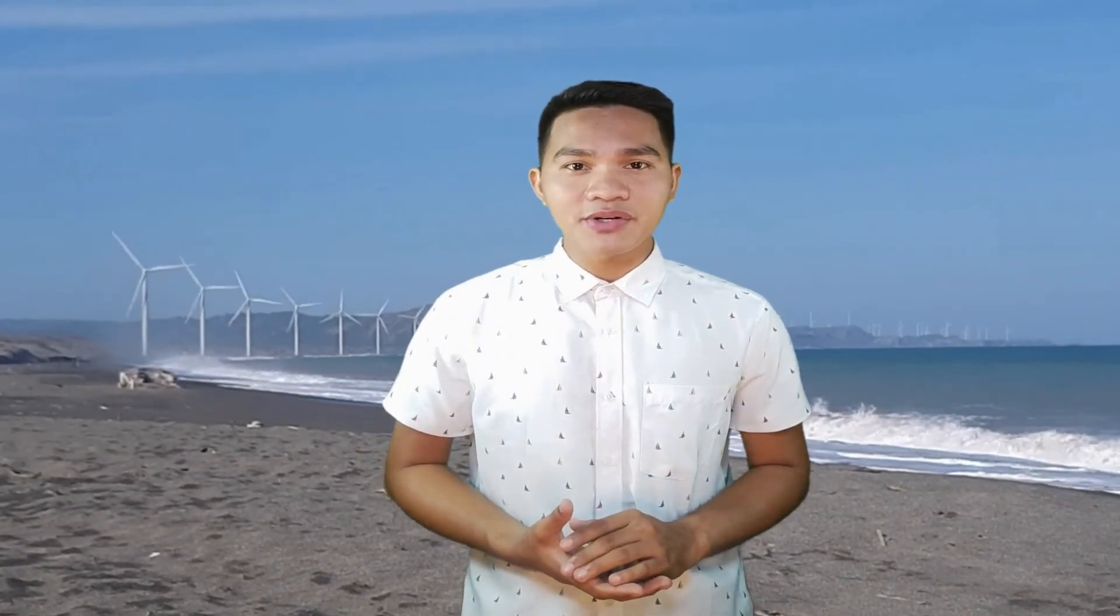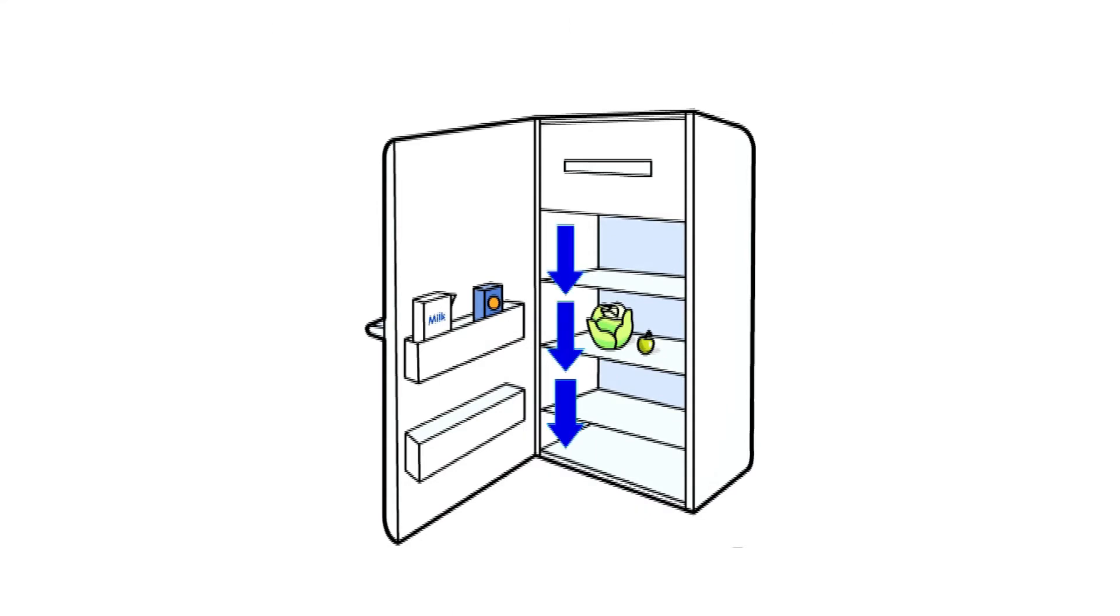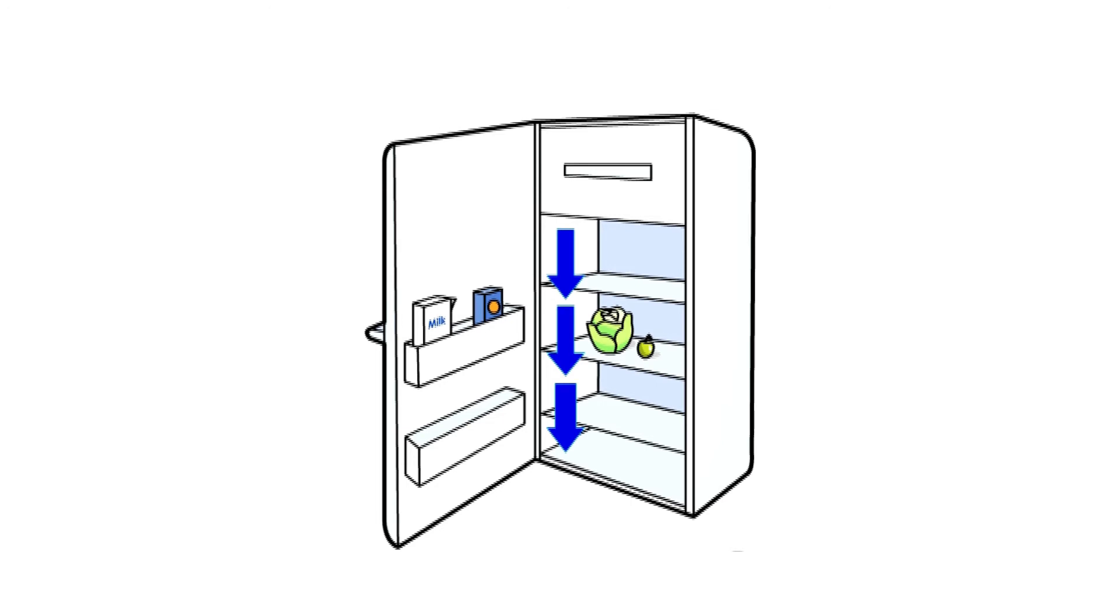Convection also occurs in refrigerators. Freezer compartments are put on top because cool air sinks, so it cools the food on the way down. It is warmer at the bottom, so this warmer air rises and a convection current is set up.